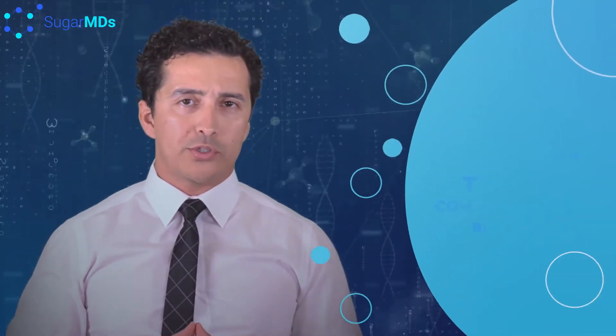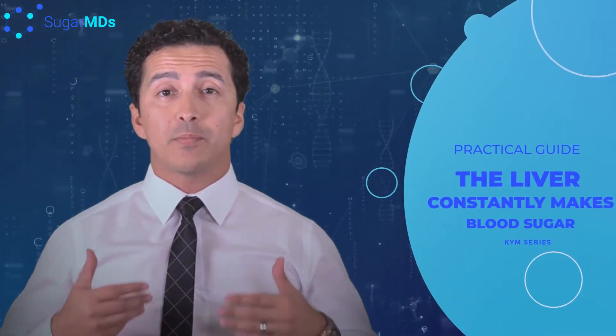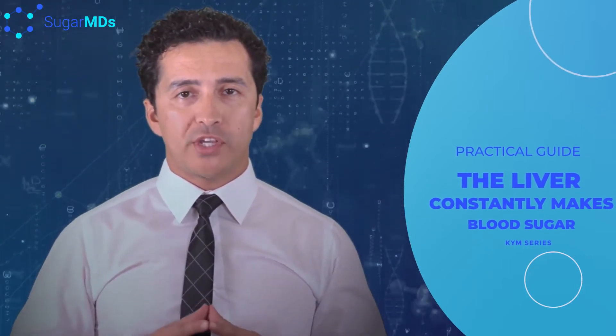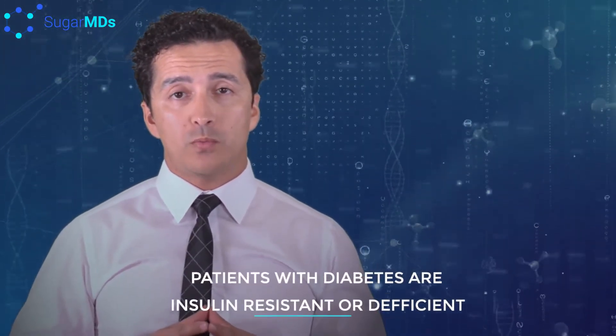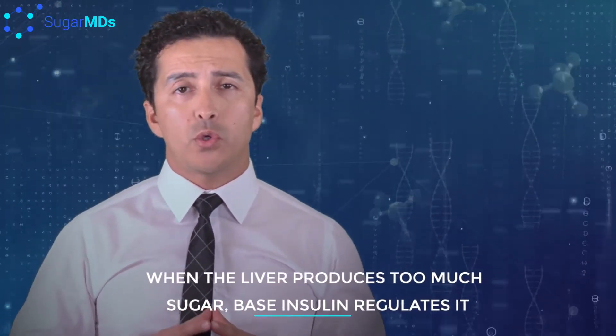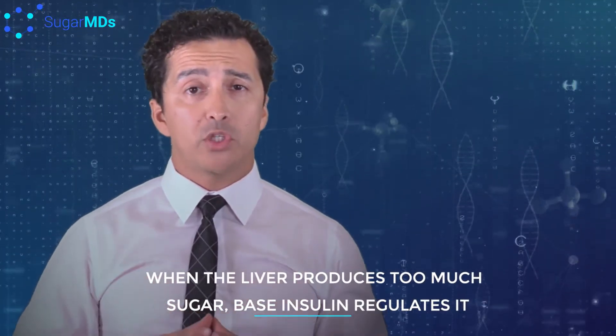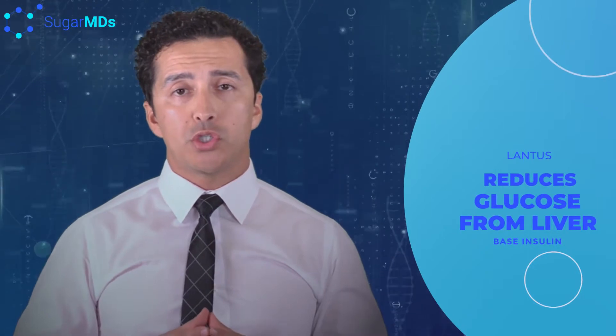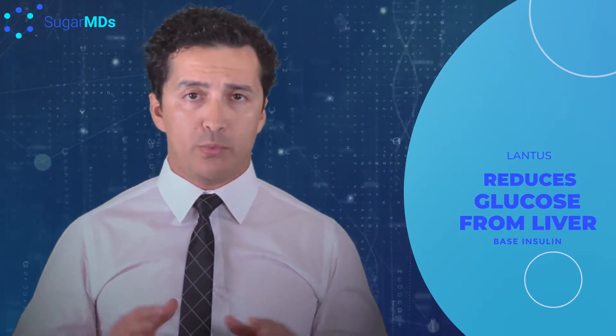The purpose of the basal insulin, of any basal insulin, is to maintain your blood sugars. Why do we have to maintain your blood sugars? Because your body constantly makes blood sugars. When I say your body, I'm talking about your liver. So that is a process that is designed to keep your blood sugar stable, especially during prolonged fasting periods.